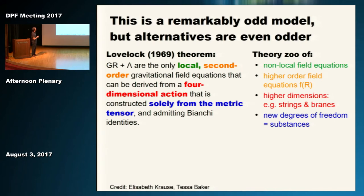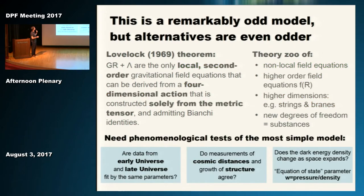Maybe there's an easier explanation behind it—possibly the opposite is true. The Lovelock theorem says that general relativity plus a cosmological constant is the only local second-order gravitational field equation that can be derived from a four-dimensional action constructed only from the metric tensor. So if you want a different explanation than this constant that pops up in your equation, you have to break one of these assumptions. There's a whole zoo of theories that each break a different assumption. Experimentally, what we should do is make phenomenological tests of this simple Lambda CDM model.